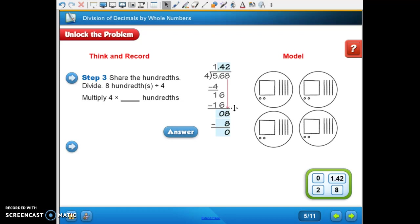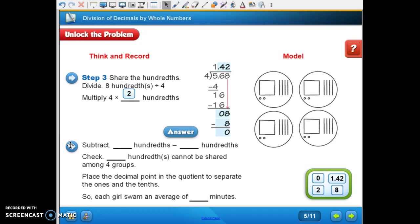So we would have had our four up here. And when we subtracted our 16, we got zero. So we bring down our eight. And how many fours can go into eight hundredths? Two, right? So multiply four times two hundredths. Subtract eight minus eight hundredths, which is what we've done here, to get zero hundredths.